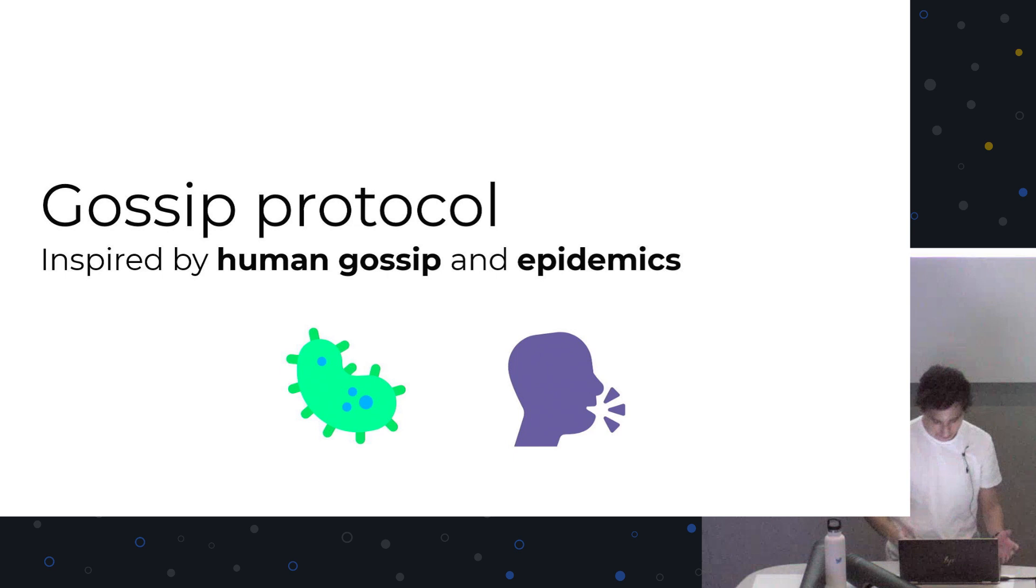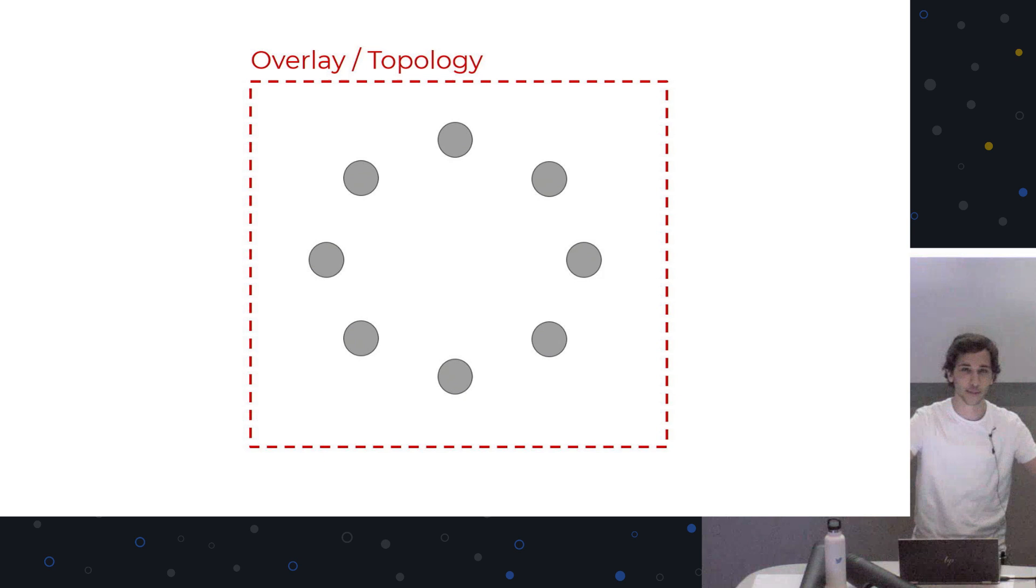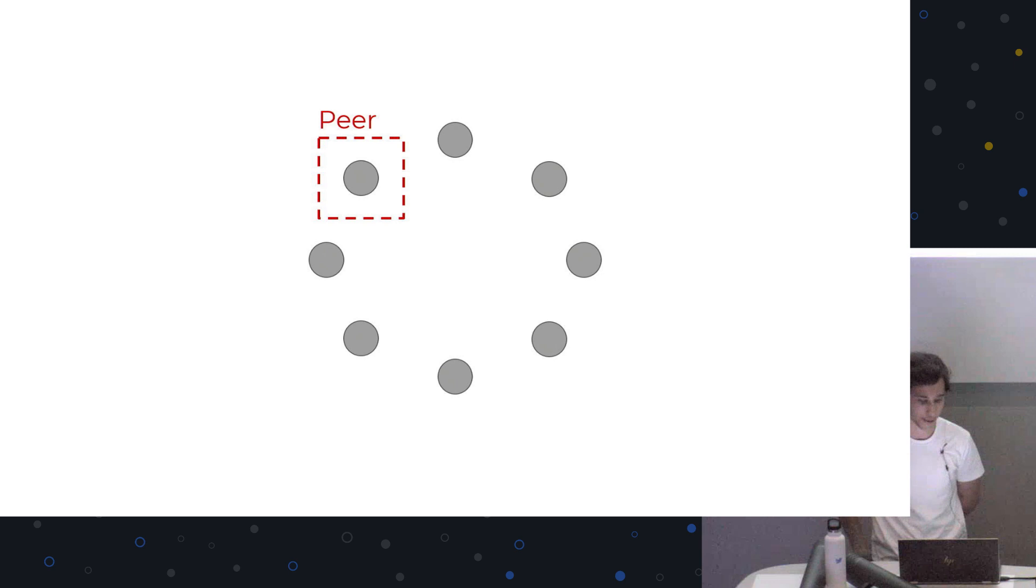Before we get into more details, I just have some terminology. This group of things that we have, of people or servers, whatever you have, this is called the overlay or the topology. And the topology is how the nodes are located. You might have some that are connected if maybe people know each other or they spoke with each other. And in literature, you also see the name peer to denote a single person or server.